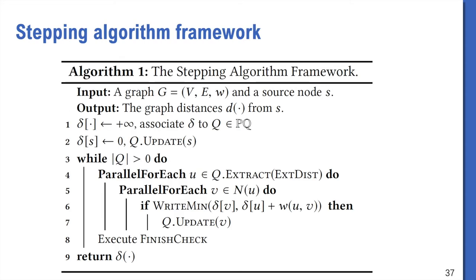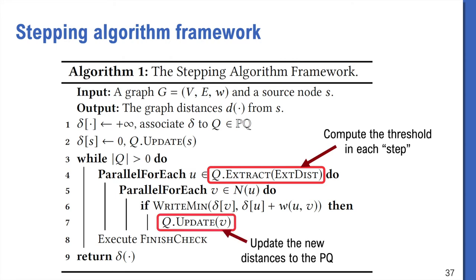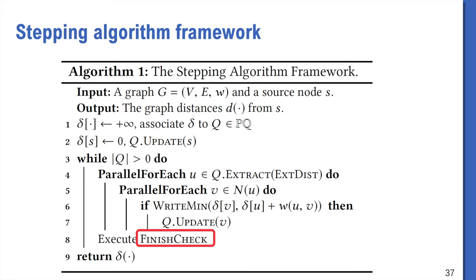This is a simple pseudocode of the Stepping algorithm. We use delta to denote the tentative distances. We use a lazy-batch priority queue called Queue here to maintain the distances. In each step, we first compute a threshold, and then extract all vertices below these thresholds from Queue. Then in parallel, we relax all their neighbors using a priority write. If succeed, we update the distance of the neighbors in Queue. Finally, before we go to the next step, we use a finish check to make sure if we need to run more sub-steps or not. This is needed for some algorithms like delta-stepping.